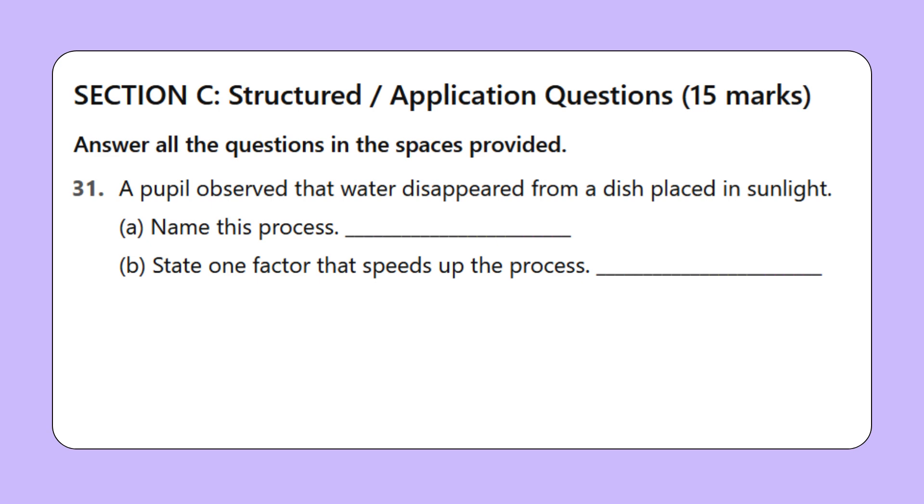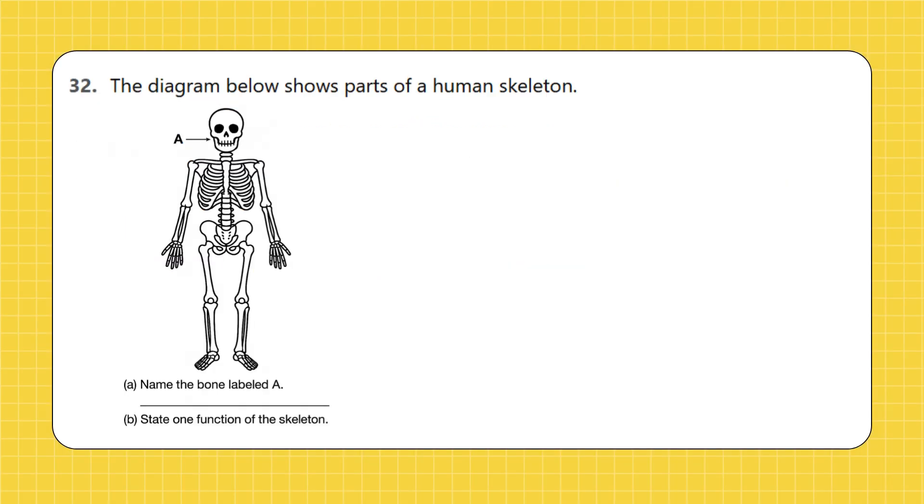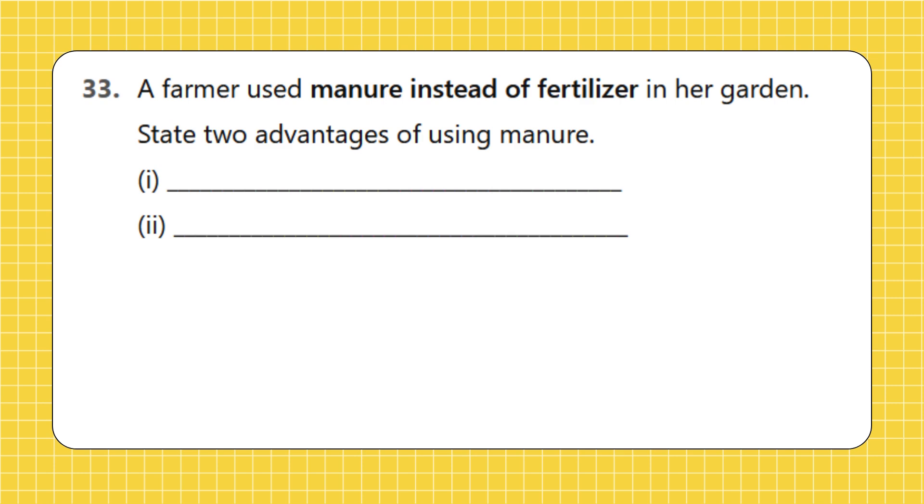Section C: Structured/application questions, 15 marks. Answer all the questions in the spaces provided. Question 31: A pupil observed that water disappeared from a dish placed in sunlight. A. Name this process. B. State one factor that speeds up the process. Question 32: The diagram below shows parts of a human skeleton. A. Name the bone labeled A. B. State one function of the skeleton. Question 33: A farmer used manure instead of fertilizer in her garden. State two advantages of using manure.